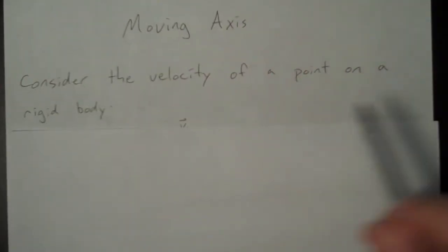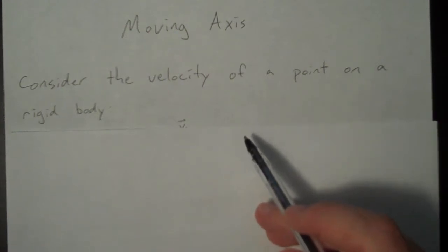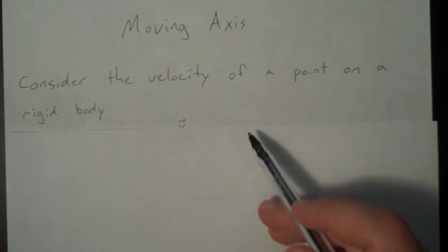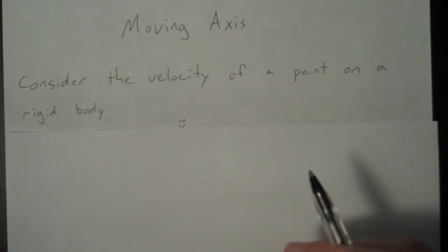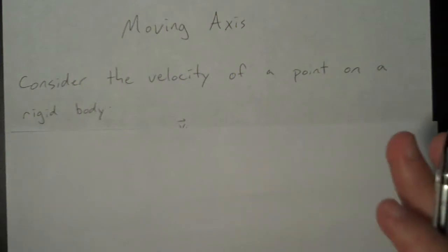So let's start off by considering the velocity of a point on a rigid body. What we are eventually going to do is calculate the full kinetic energy of a rotating moving object. So that's our end goal here.